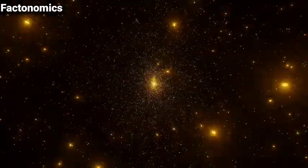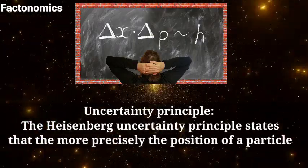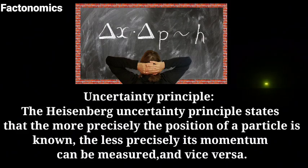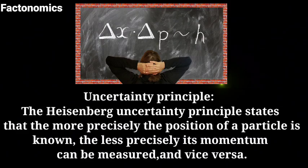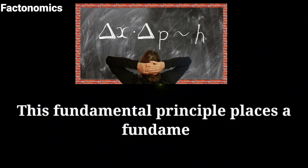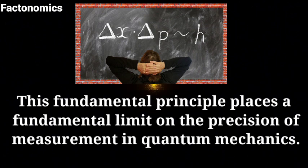Fact number 2. Uncertainty principle. The Heisenberg uncertainty principle states that the more precisely the position of a particle is known, the less precisely its momentum can be measured, and vice versa. This fundamental principle places a fundamental limit on the precision of measurement in quantum mechanics.